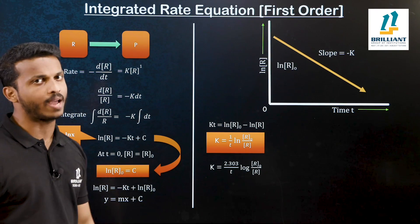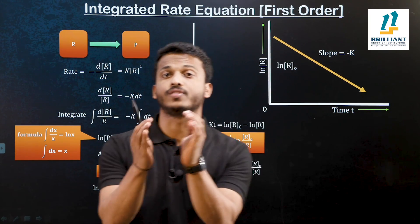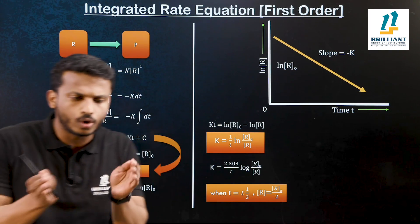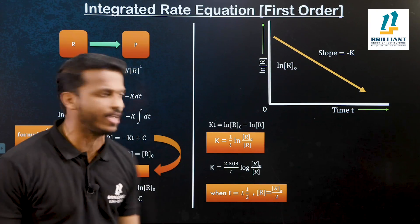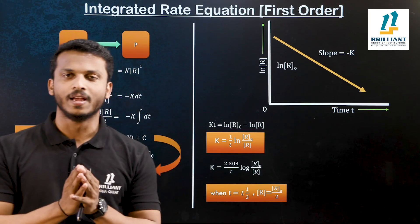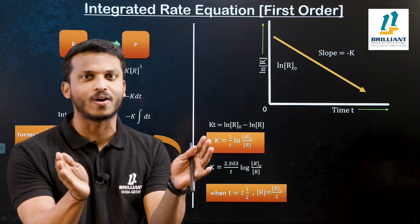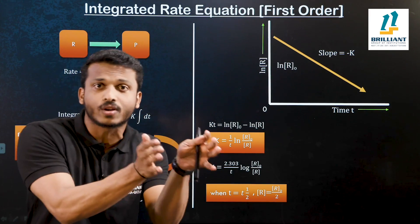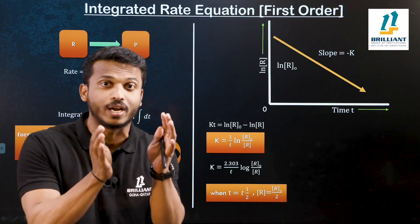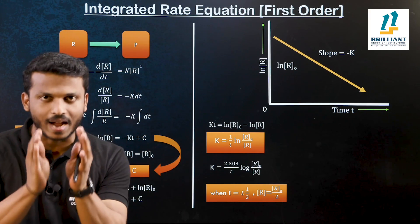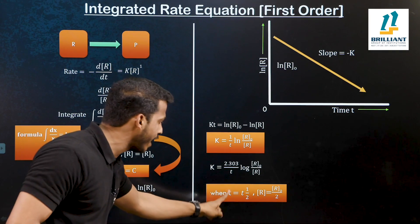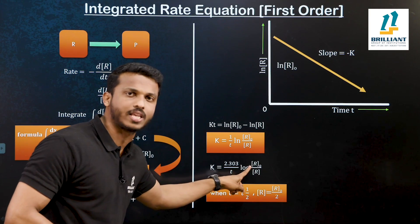Now let me calculate the half life equation, T half, for the first order reaction. What do you mean by half life? It is the time taken for a substance to reduce to half of its initial amount. When time equals T half, the concentration left in the system is R equals R₀ by 2. At T half, the initial concentration has been reduced by half.